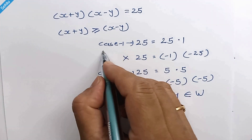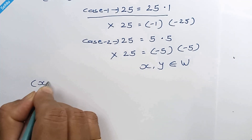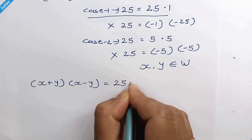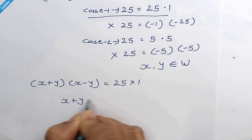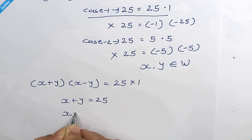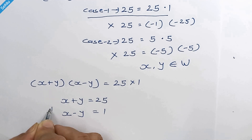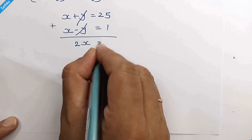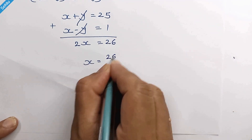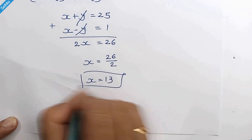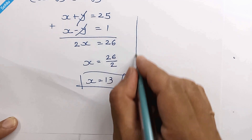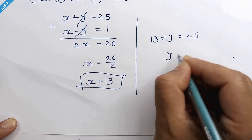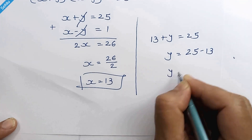Let's take case 1. Our equation is x plus y times x minus y is equal to 25 times 1. We can compare: x plus y is equal to 25 and x minus y is equal to 1. Adding them, we have 2x is equal to 26, so x is equal to 13. Putting this value into the equation: 13 plus y is equal to 25, so y is equal to 25 minus 13, which gives y is equal to 12.